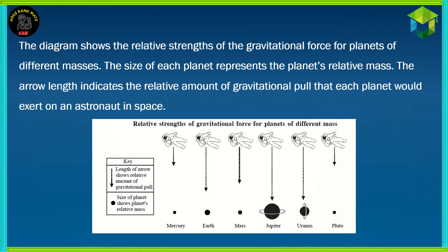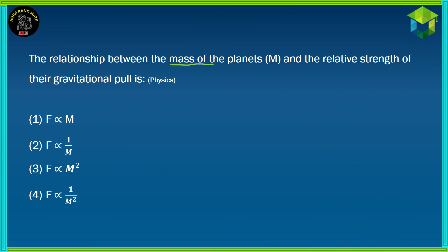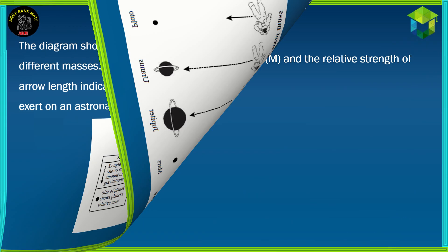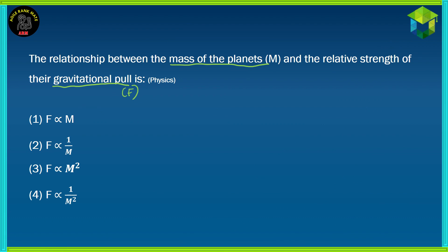In this question, we have to find a relation between the mass of the planets and their gravitational pull. We can see that Mercury is small, and the size of Mercury is small as compared to the other planets, and that's why the amount of gravitational pull is also low. While if we look at Jupiter, its mass is very high and so is the gravitational pull. Now, if we have to express this in numerical form, then we have to look at Newton's law of gravitation.